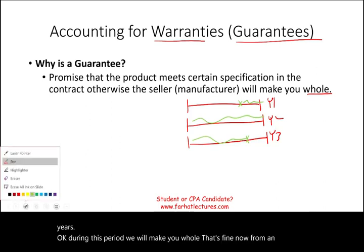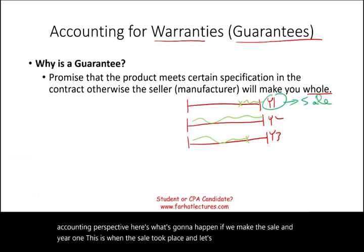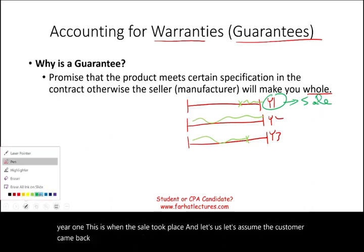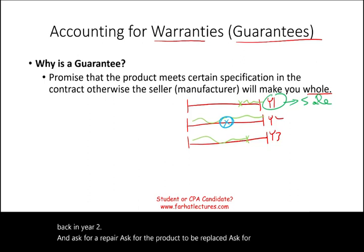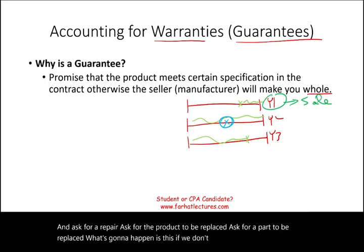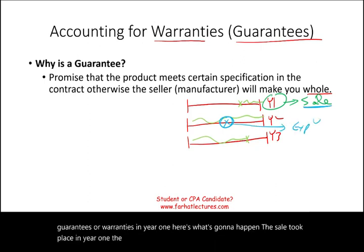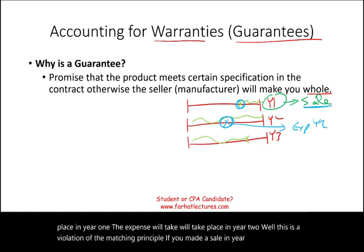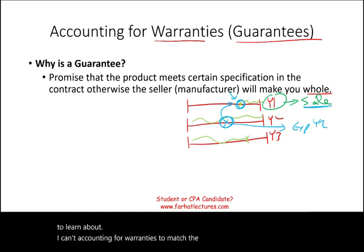From an accounting perspective, if we make the sale in year one — this is when the sale took place — and the customer came back in year two asking for a repair, a replacement, or a part to be replaced, if we don't account for those warranties in year one, the sale is in year one but the expense falls in year two. This is a violation of the matching principle. If you made a sale in year one, all related expenses should be recorded in year one.